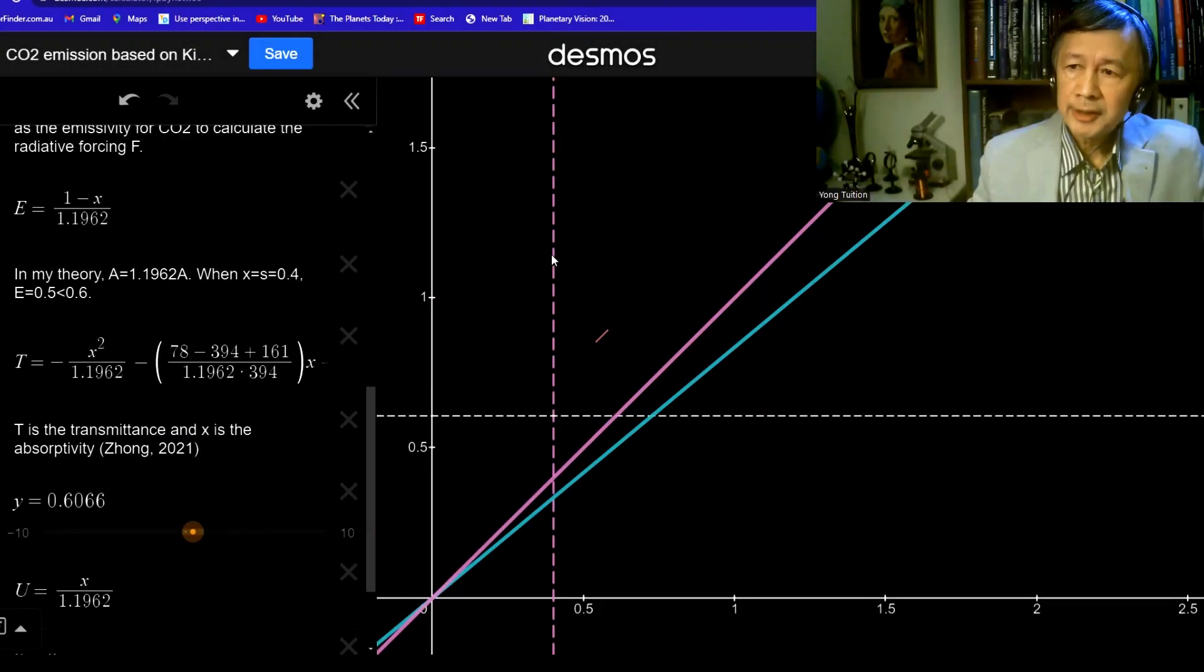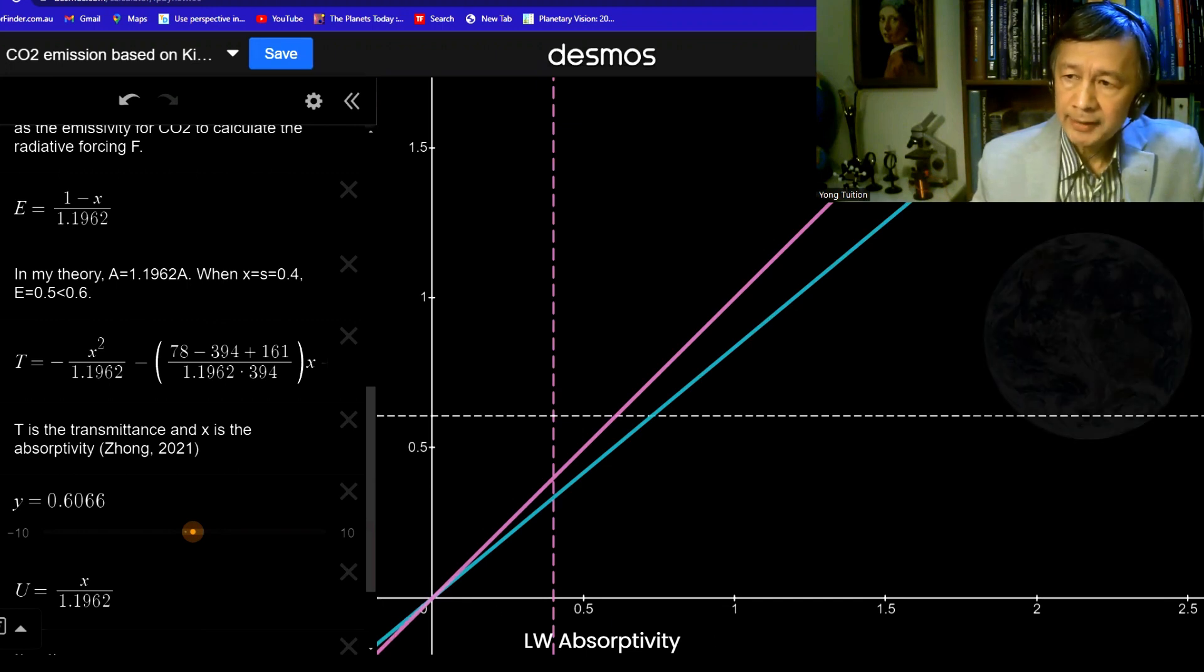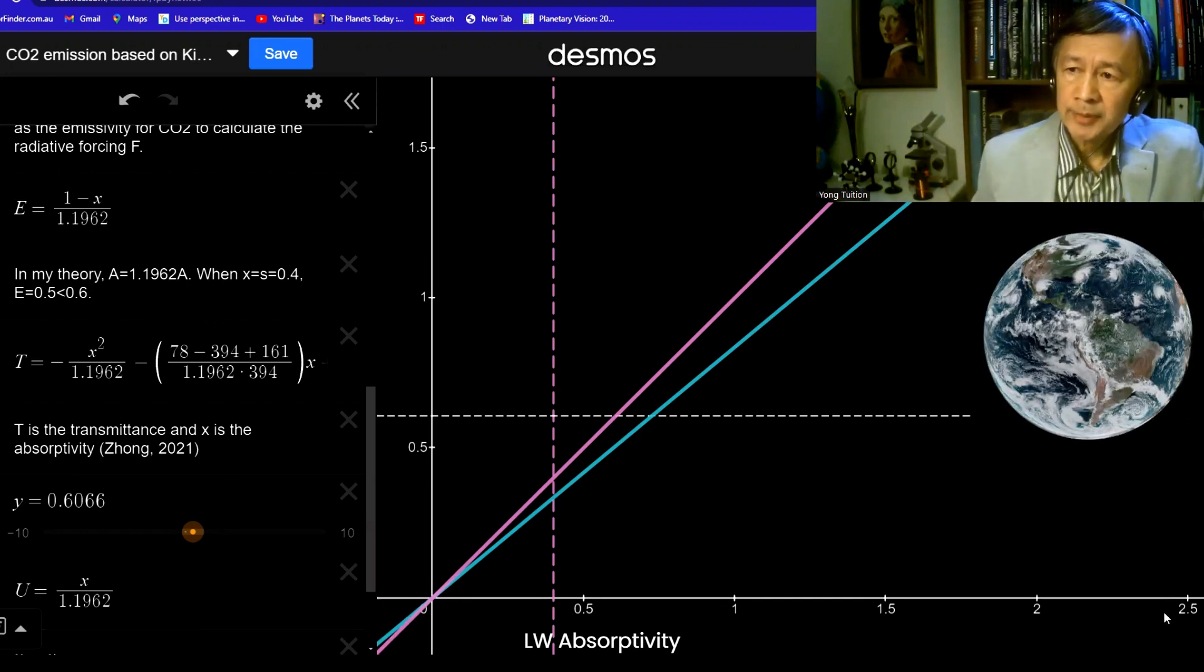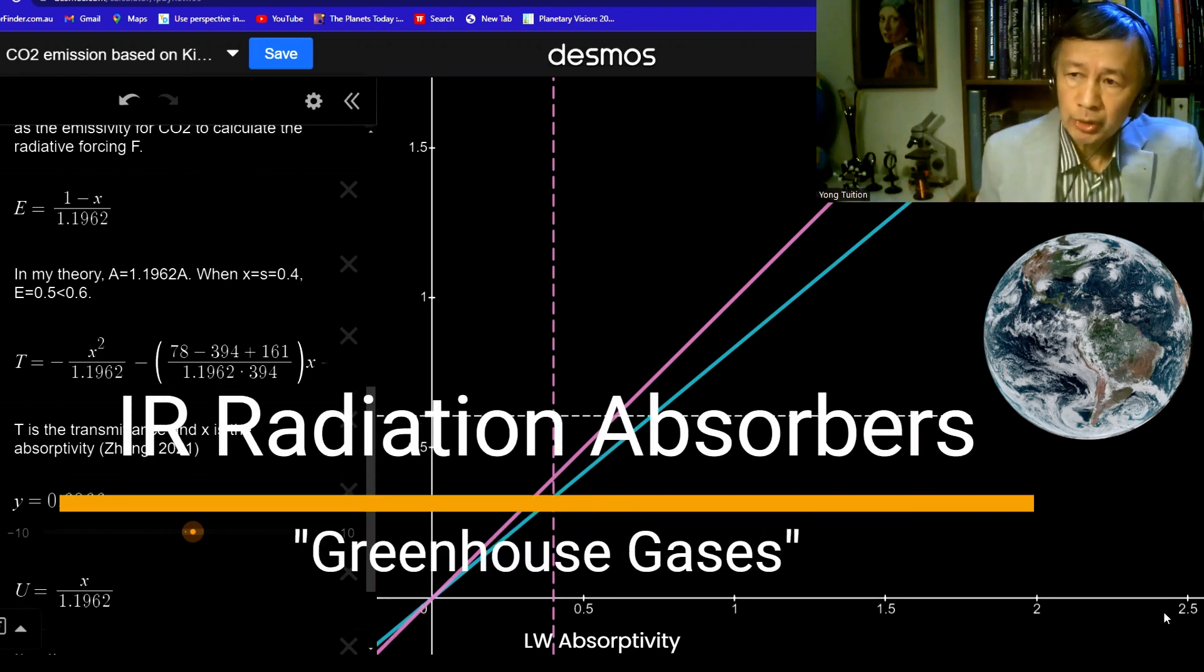I use DESMOS to illustrate my idea. In this window, the horizontal axis represents the absorptivity, longwave absorptivity of atmosphere. People would call it the absorption by greenhouse gases, including water vapor, CO2, and ozone, and so on.